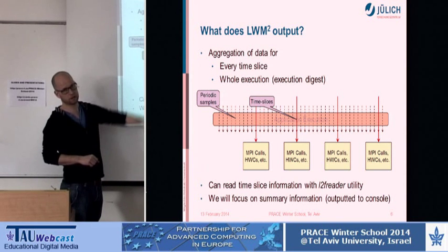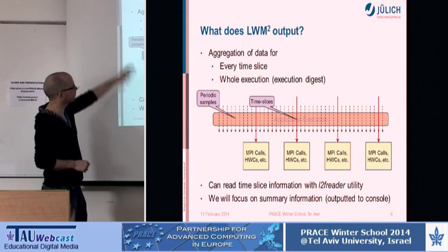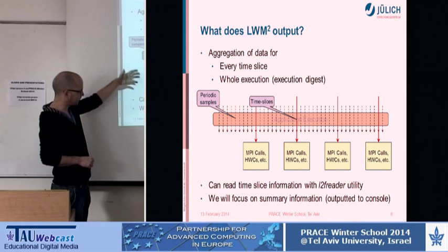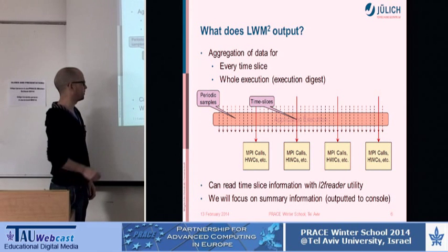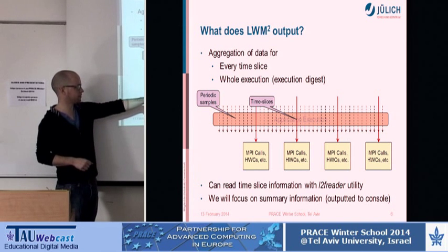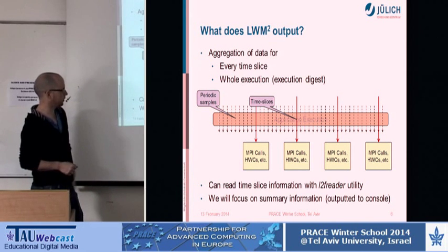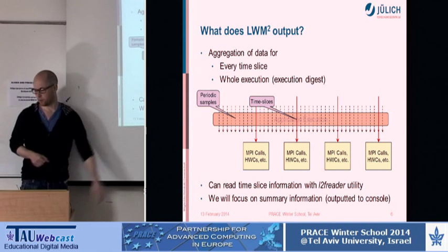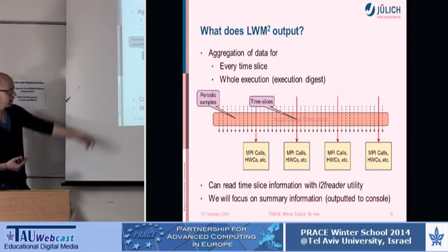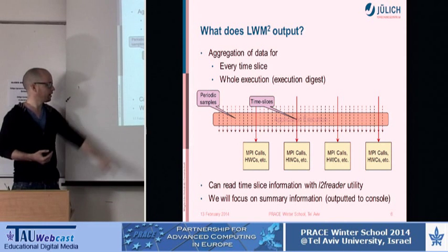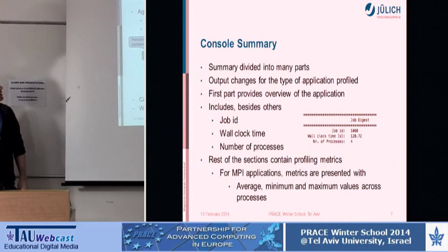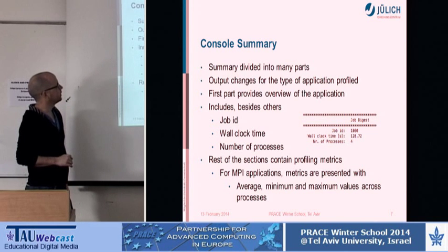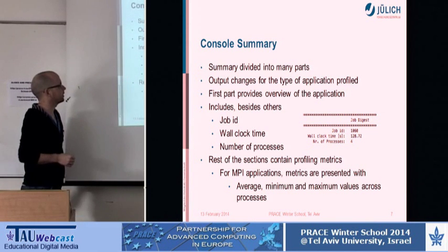In terms of what it outputs: it takes time slices — captures information at some interval — and for every time slice it captures MPI calls and hardware counters. Afterwards it records all that information per time slice so you can see how things develop over time. You can read the time-slice information with the L2F reader included in the package. Today we're just going to focus on the summary information it gives at the end, which we can output to the console.